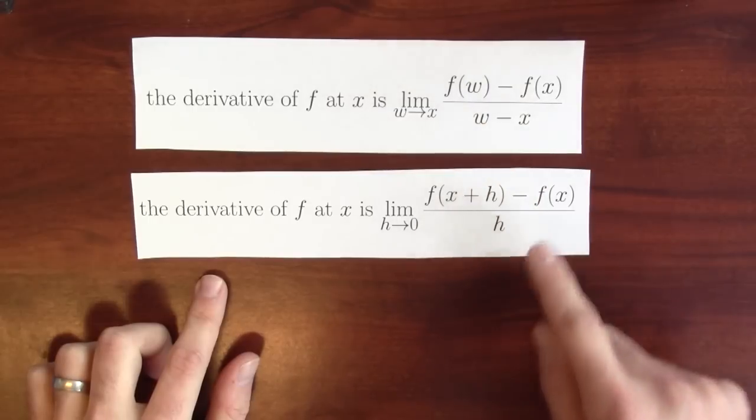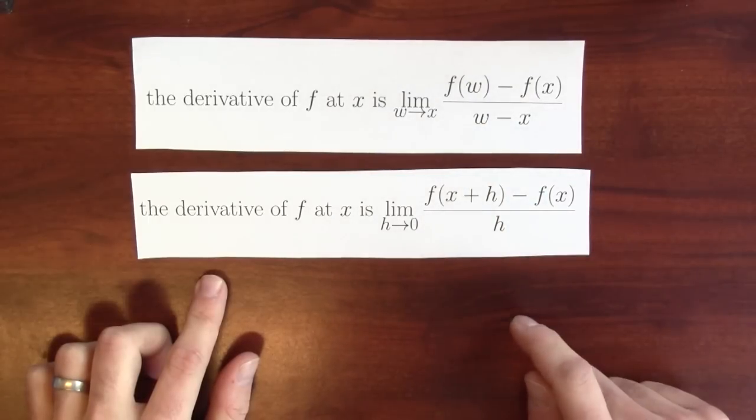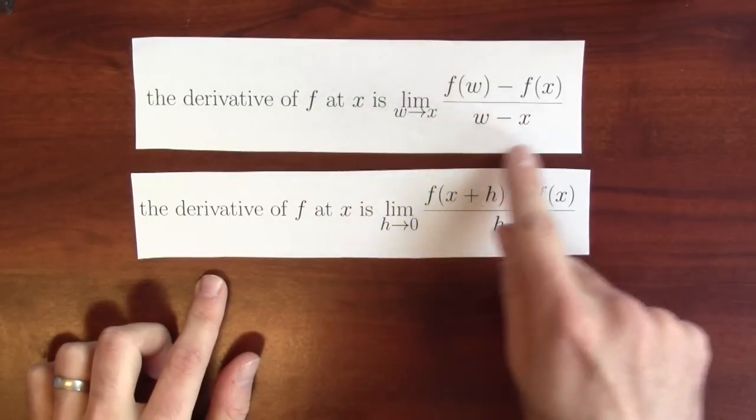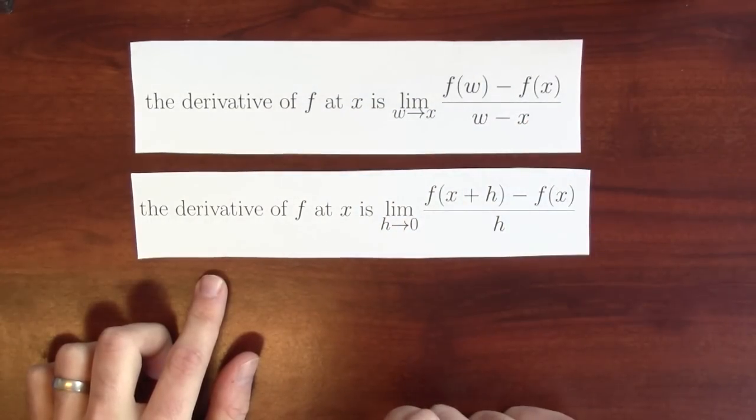And in both cases, the denominator is measuring how much the input was changed. Here, h is exactly how much the input was changed by. Here, w minus x is measuring how much the input changed by.